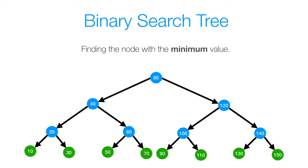Now, what does it mean to be the node with the minimum value in a binary search tree? We know that everything to the left of a given node is smaller than that node. So if we keep approaching to the left, we'll eventually find the smallest node in our binary search tree, which in this case is going to be 10.